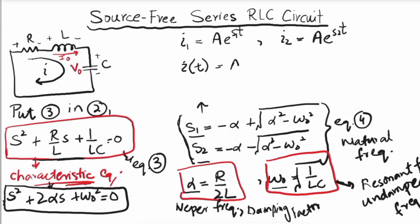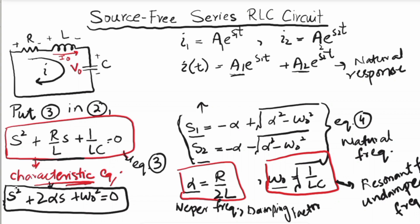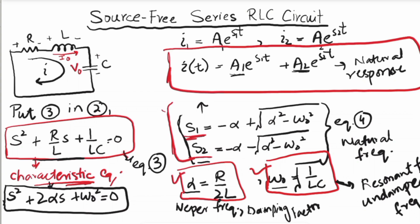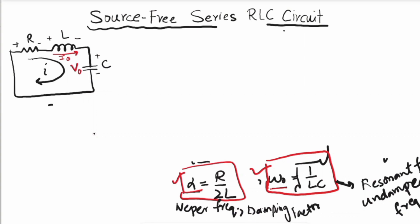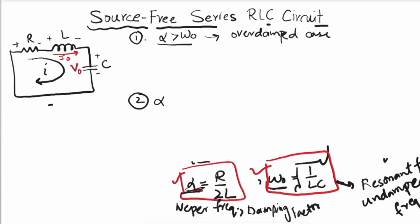These two values of s mean there are two possible solutions. For s1: i1 = A₁·e^(s1·t), and for s2: i2 = A₂·e^(s2·t). The total response is i(t) = A₁·e^(s1·t) + A₂·e^(s2·t). This is the natural response of the series RLC circuit, where A₁ and A₂ are determined from the initial values i(0) and di(0)/dt.